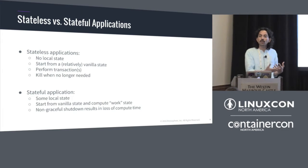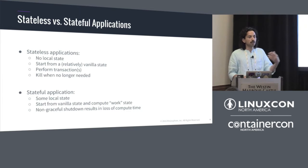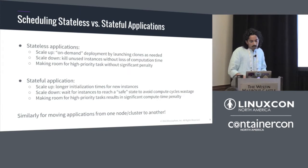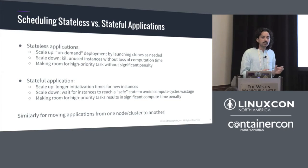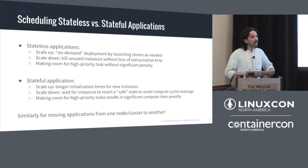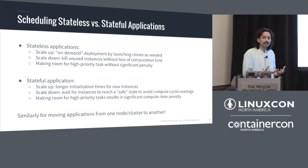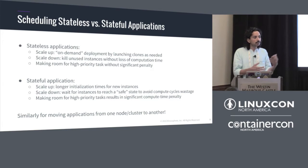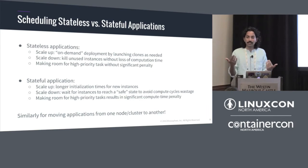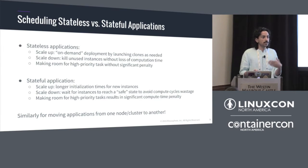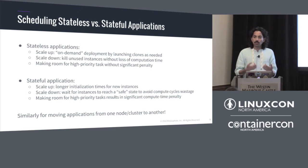If it were a graceful shutdown, the application knows to save whatever local state it has to a remote server or database. When scheduling stateless applications, scaling up is straightforward — launch new instances on new nodes from a vanilla image. When you scale down, just kill extra instances. If a high-priority task comes in, you can easily kill the instances that need to be preempted and the high-priority task gets the resources right away.